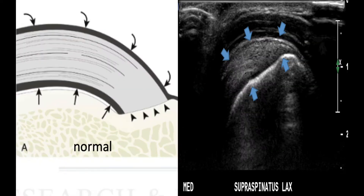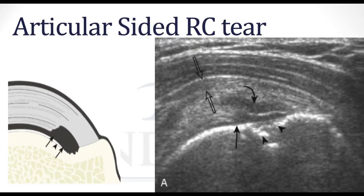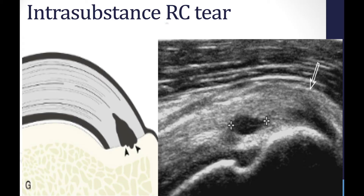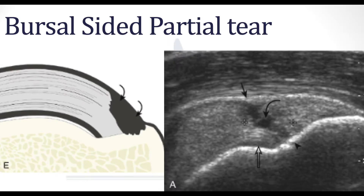Now let's see what happens when we start having problems. In an articular-sided tear, we could clearly see the problem where the tendon is torn. Let's look at an intra-substance tear where the problem is inside the actual tendon. And a bursal-sided tear is where the torn tissue is on the top.